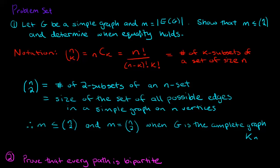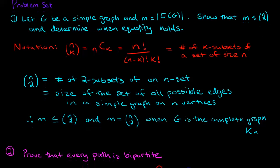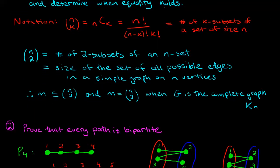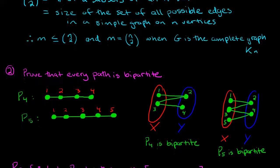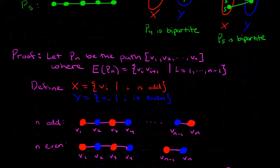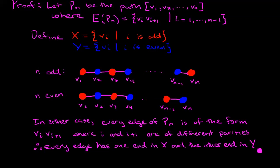Welcome to part two of our problem set. In the first part, we already proved that if g is a simple graph, then the number of edges it has is at most n choose two, and it will have n choose two edges when the graph is the complete graph. We also proved that every path is bipartite. We saw it with a couple of examples, and then we gave the full proof.